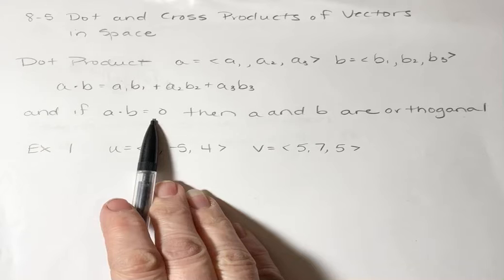To find their dot product, you multiply your x's, you multiply your y's, you multiply your z's, and then you add them up. And same as with two dimensions, if the dot product is zero, then the two vectors are orthogonal.